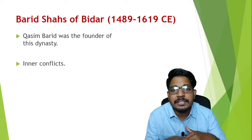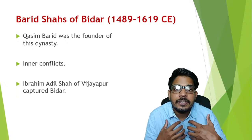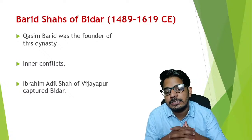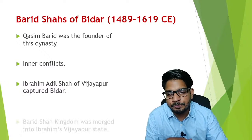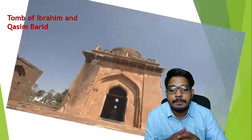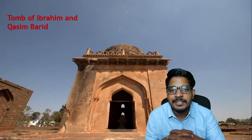Because of constant conflicts within the court and family, the Barid Shahs couldn't provide stable governance. As a result, Ibrahim Adil Shah of Vijapur captured Bidar, and later the Barid Shahs of Bidar became a part of the Adil Shahs of Vijapur. This is the tomb of Qasim Barid — you can see the dome-like structure, the arched entrance, and small windows in the same arch shape, which are features of Islamic architecture.